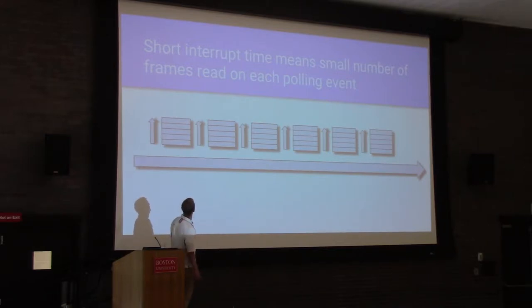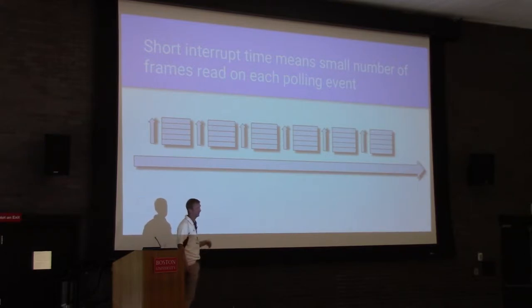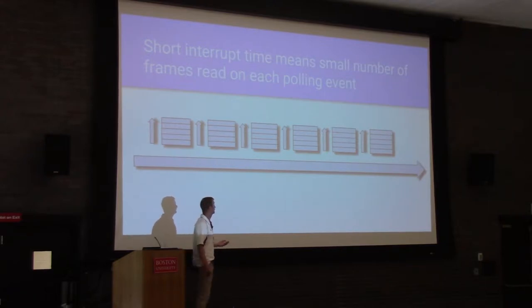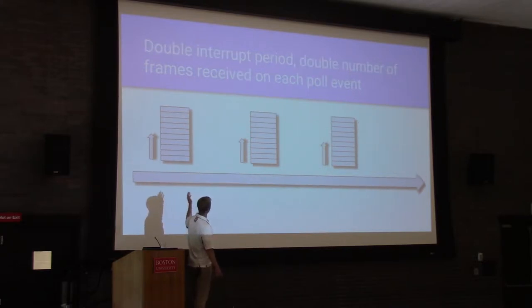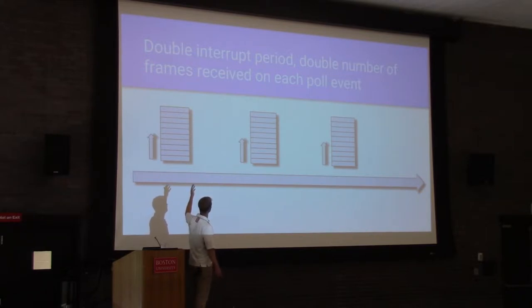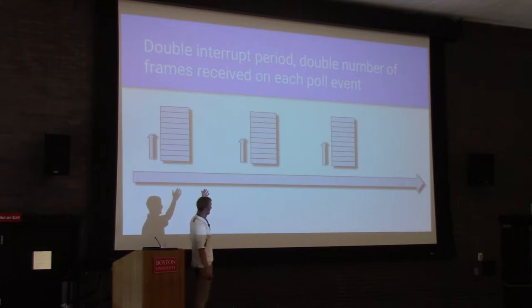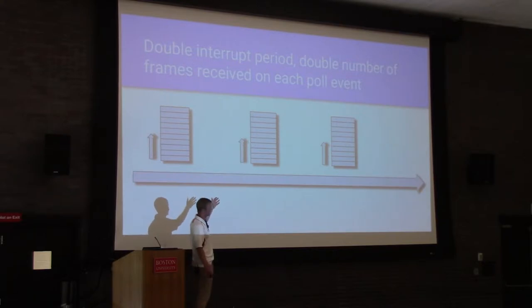In a steady state, this looks pretty good. If we have a short interrupt time, this means a really small number of frames processed in each polling event. That can be good if your concern is latency, but bad if your concern is throughput, because an interrupt is pretty expensive. If we double the interrupt period with the same traffic flow, instead of receiving five frames with each polling event, we would now receive ten. This is a great description of a workload where you want high throughput — and the downside is high latency.